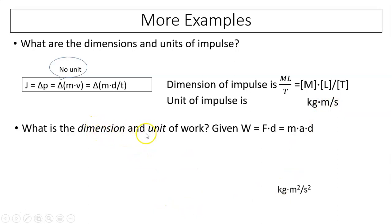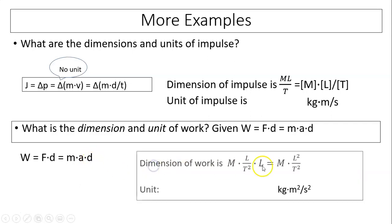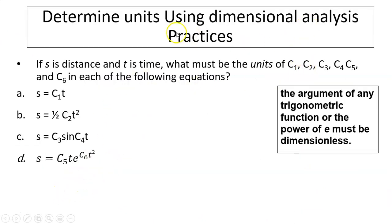What's the dimension and unit for work? The equation is W equals F times D, which is mass times acceleration times distance. Acceleration is L over T squared, and distance is L. So it becomes M times L squared over T squared. The unit is kilograms times meters squared divided by seconds squared.